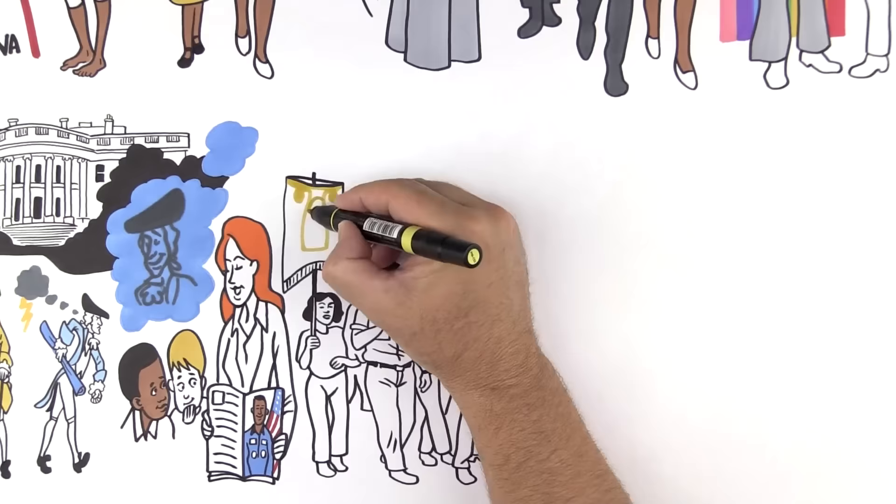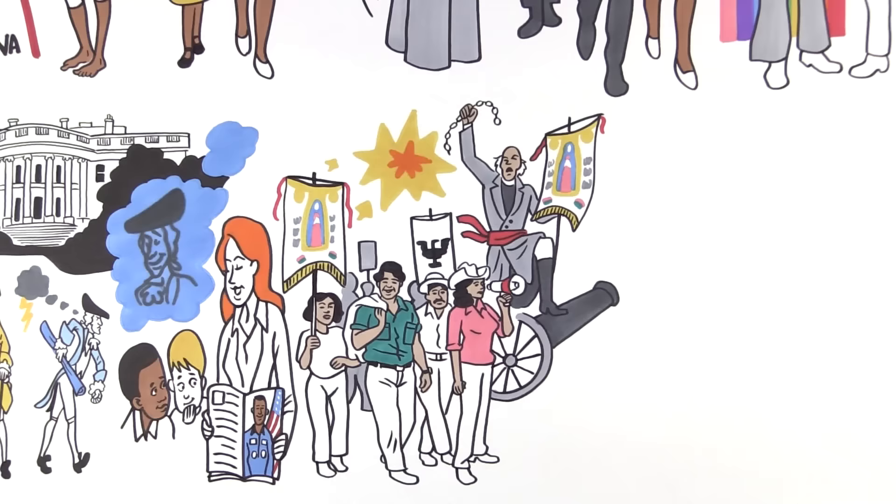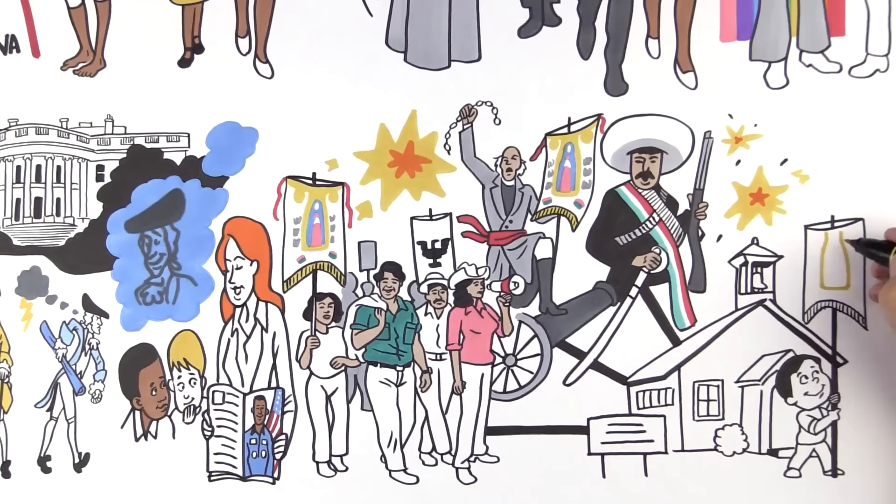The same icon was used by Father Miguel Hidalgo in Mexico's fight for independence from Spain and again in the Mexican Revolution by Emiliano Zapata. The way that these icons were used are also evidence that global and national struggles for transformational change can be organized at local levels.